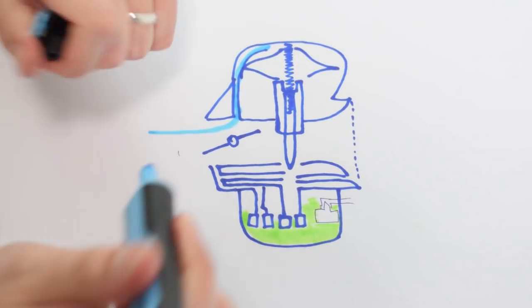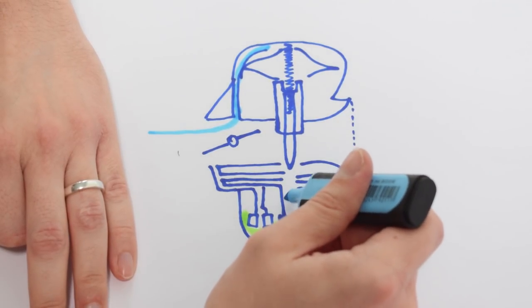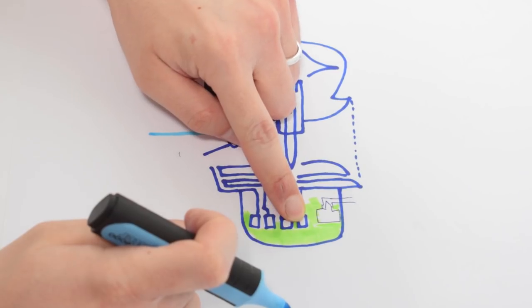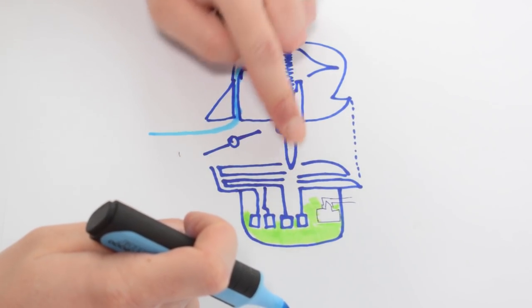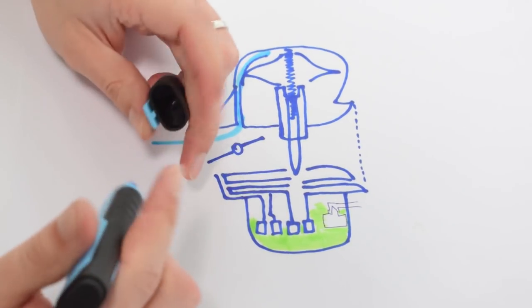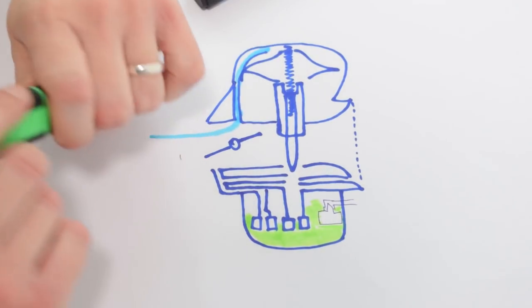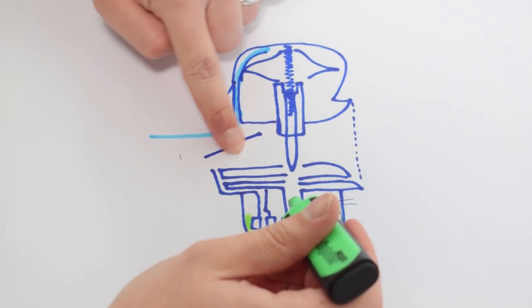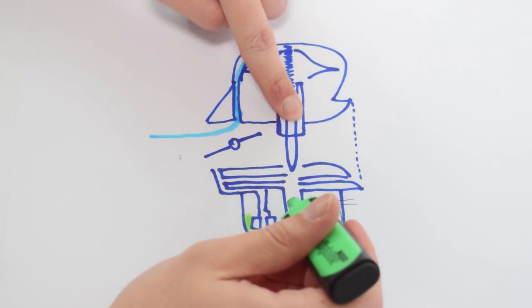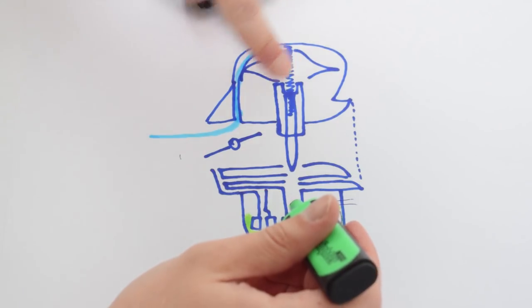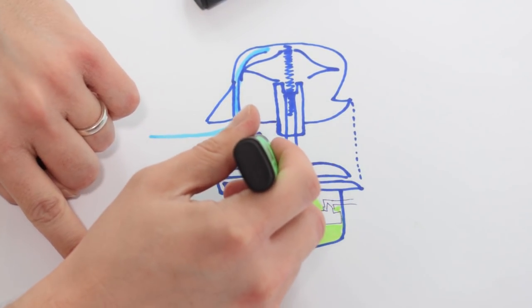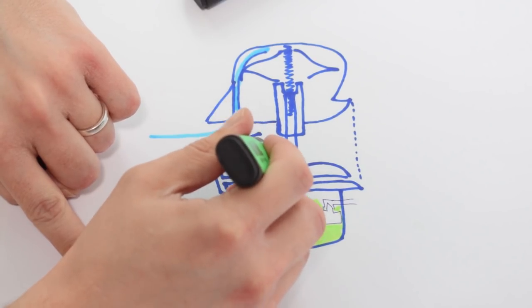Now this needle was previously right here in the main jet and it was blocking the flow of fuel through the main jet right up here. Now when the needle goes up it opens up this passageway, and the more we open the butterfly valve the more this needle will be sucked up and the more fuel will come in through the carburettor.